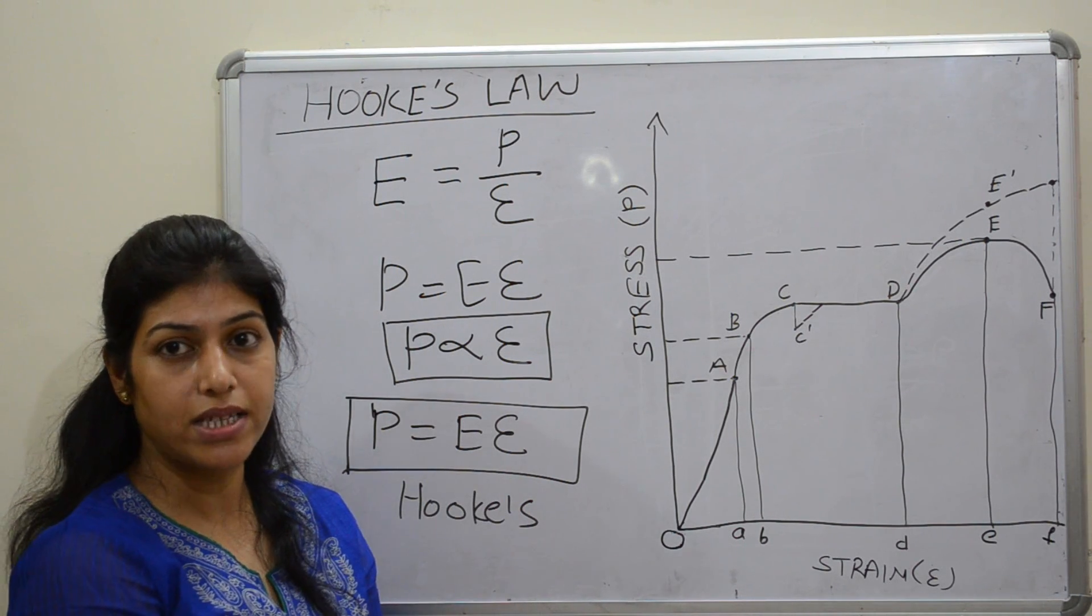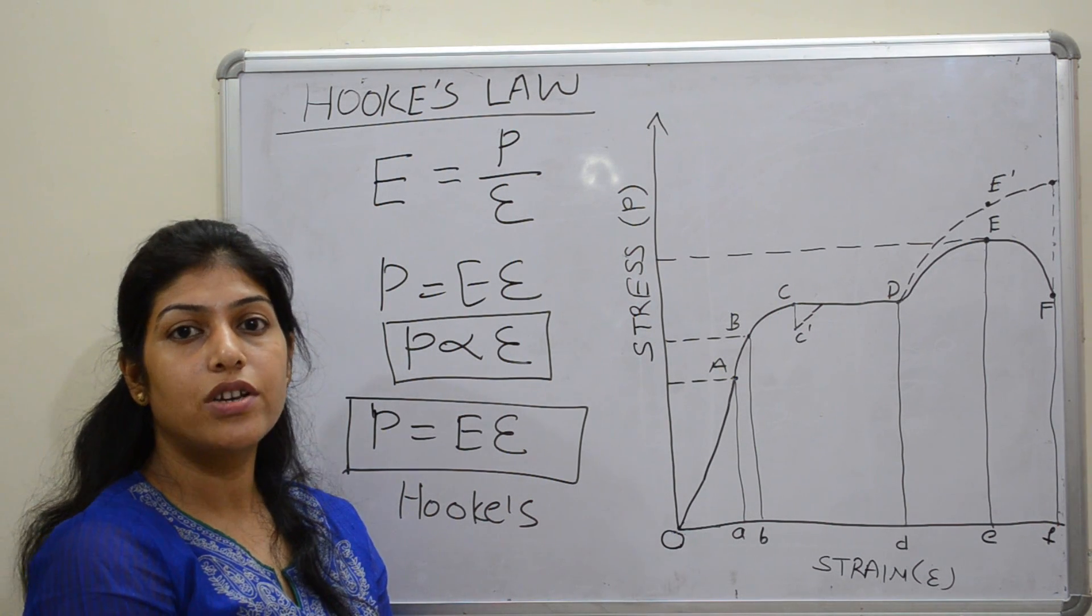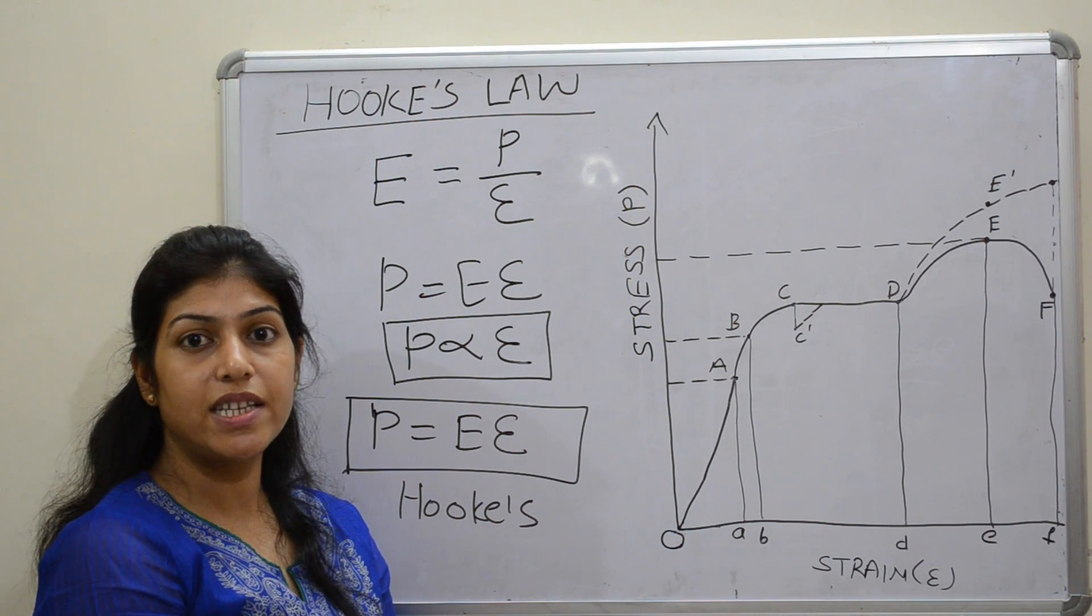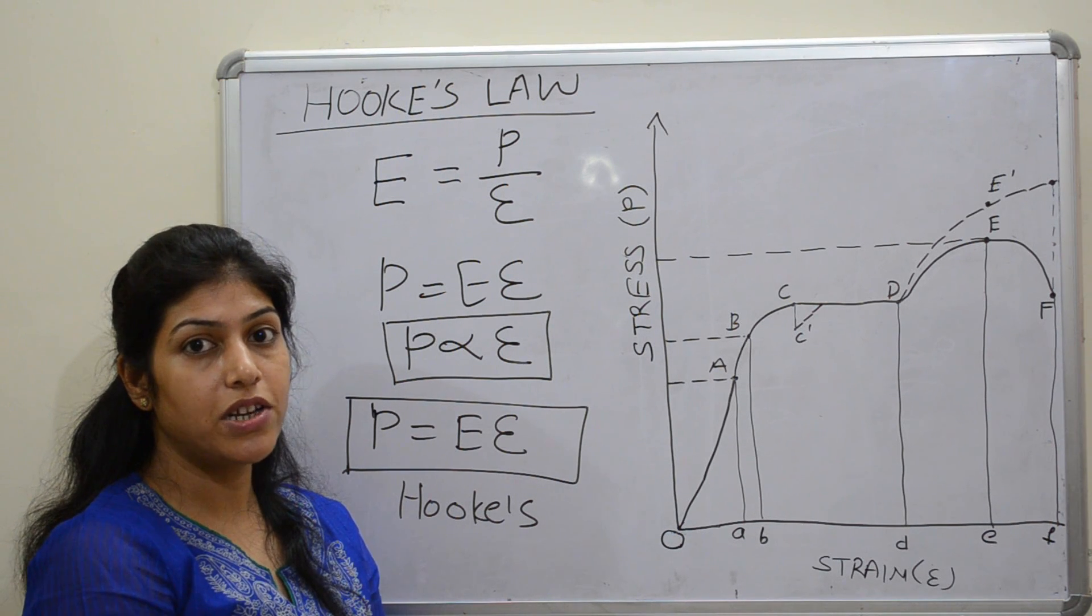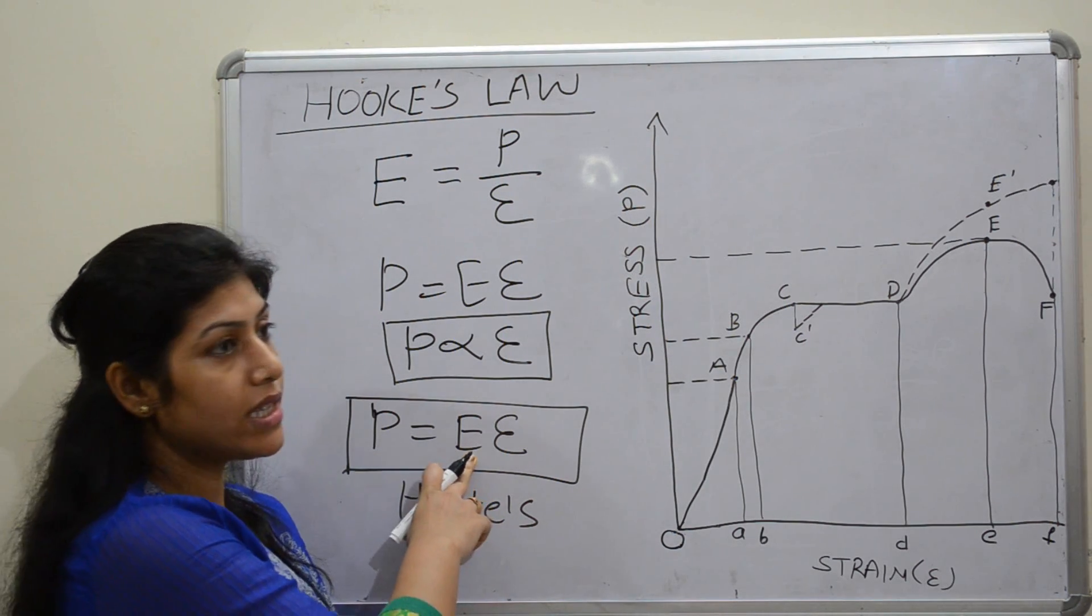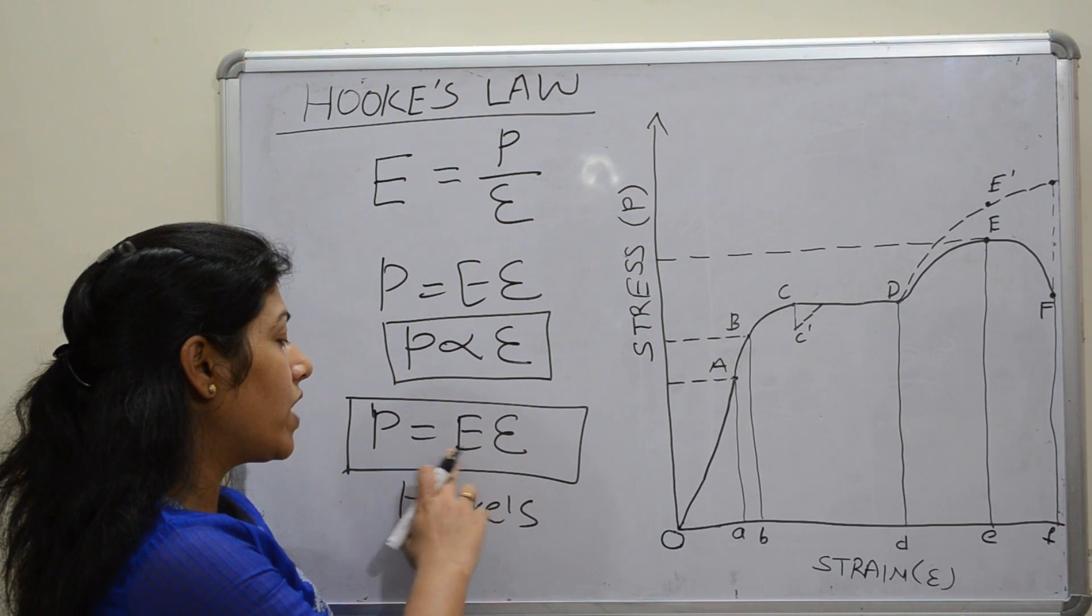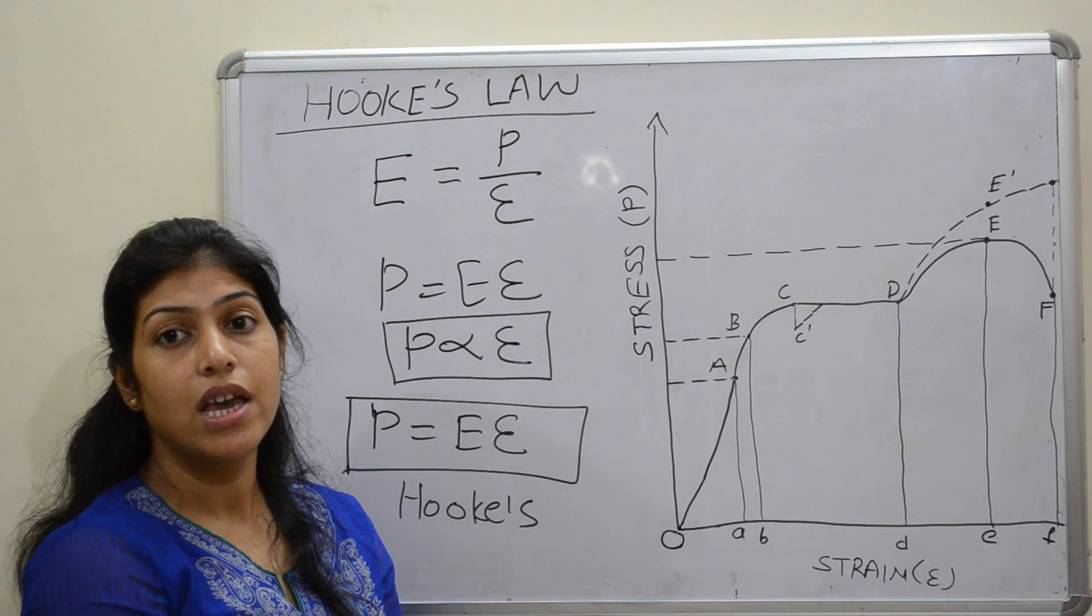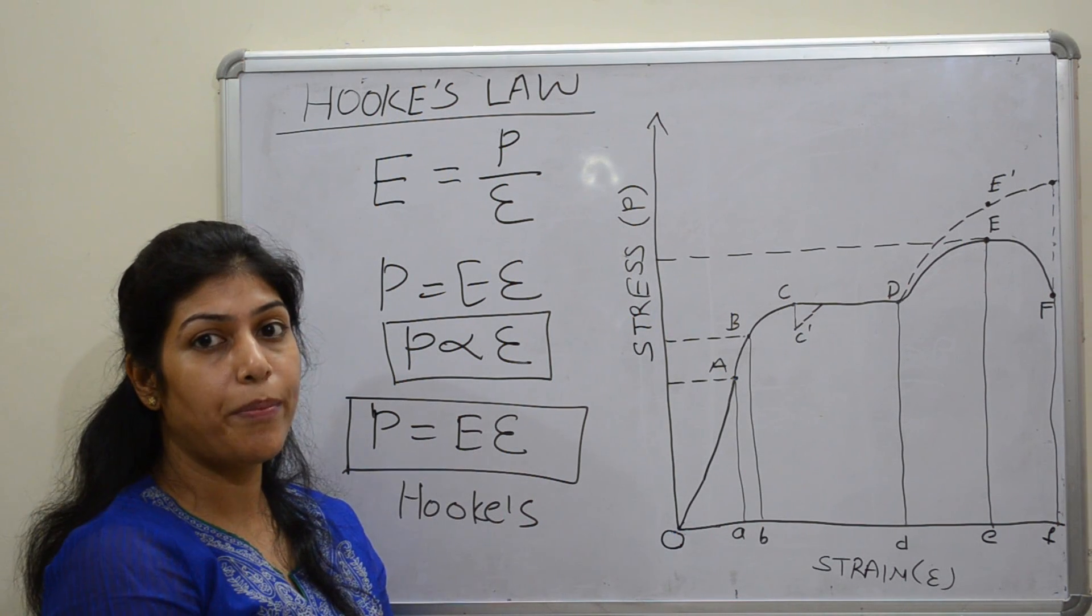E is the modulus of elasticity, also known as constant of proportionality. Constant of proportionality is defined as the intensity of stress that caused unit strain. The dimension of E is equivalent to dimensions of stress. Why? Because strain is a unitless quantity. That is why the unit of E is equivalent to unit of stress.